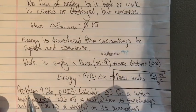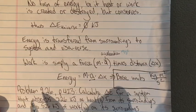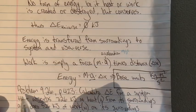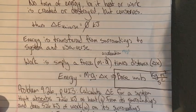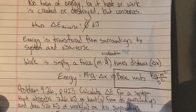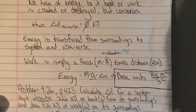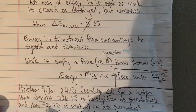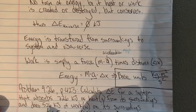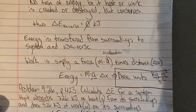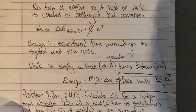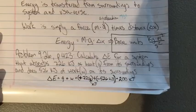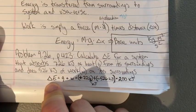Let's talk about the change in internal energy in a system. Problem 9.26 on page 423: calculate delta E for a system that absorbs 726 kilojoules of heat — heat is denoted by q — from its surroundings, and performs 526 kilojoules of work on its surroundings. Think about the plus or minus signs for work and for heat. Pause and work through it.